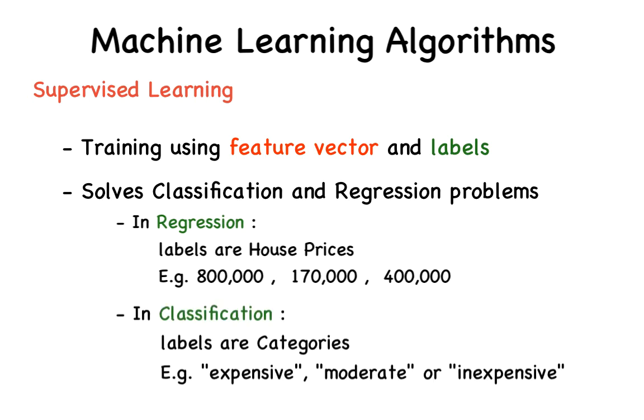For the classification form of this house problem, these three houses could be classified as expensive, inexpensive, and moderately expensive, respectively.